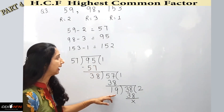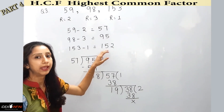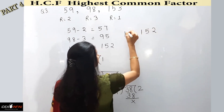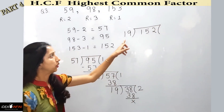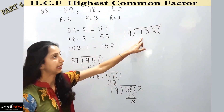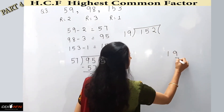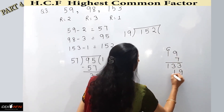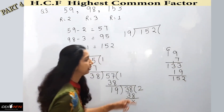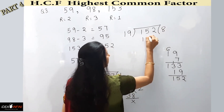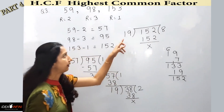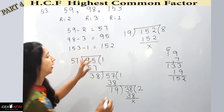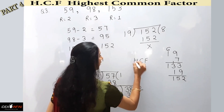Now I check whether 19 also exactly divides 152. 19 eights are 152 — yes, the remainder is 0. So 19 is the HCF of all three numbers: 57, 95, and 152, and therefore the final answer is 19.